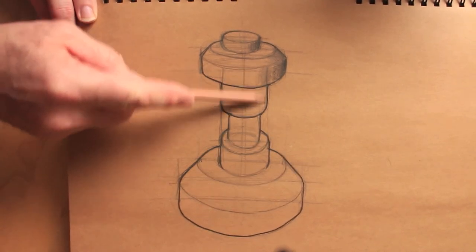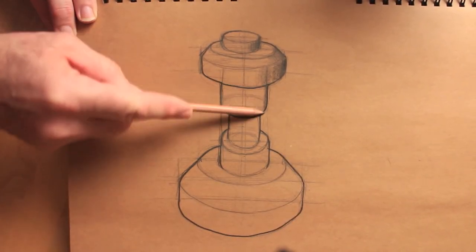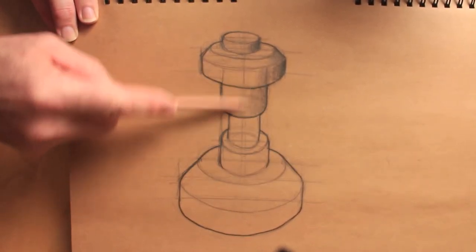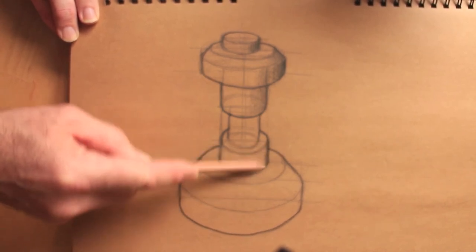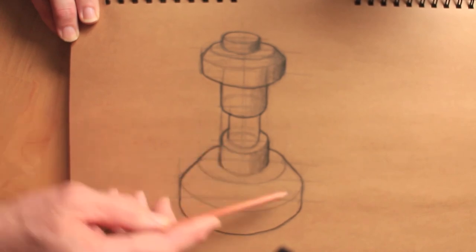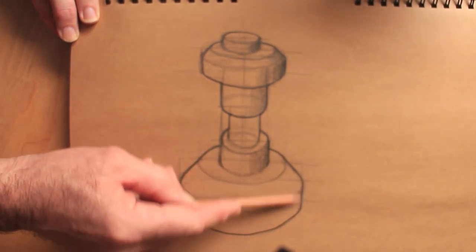And with tonal work, try and work fairly light to start off with because you can get lighter. It's kind of difficult. There are some techniques with rubbers and talcum powder. Yes, I did say talcum powder to make dark images look lighter or dark rendered areas look lighter. But for this stage, we really want to try and build up.